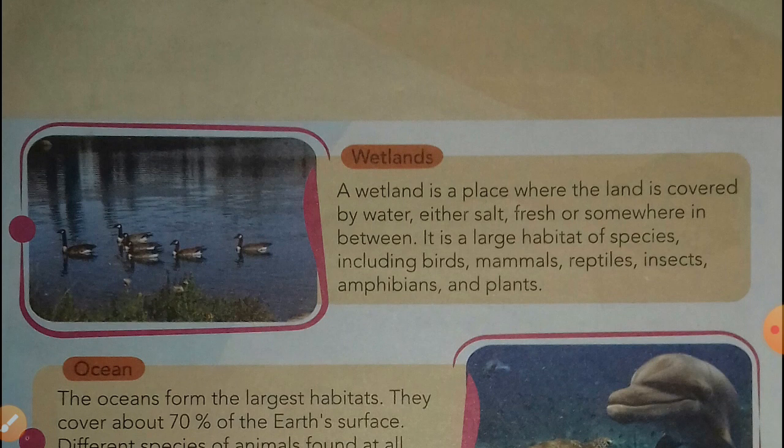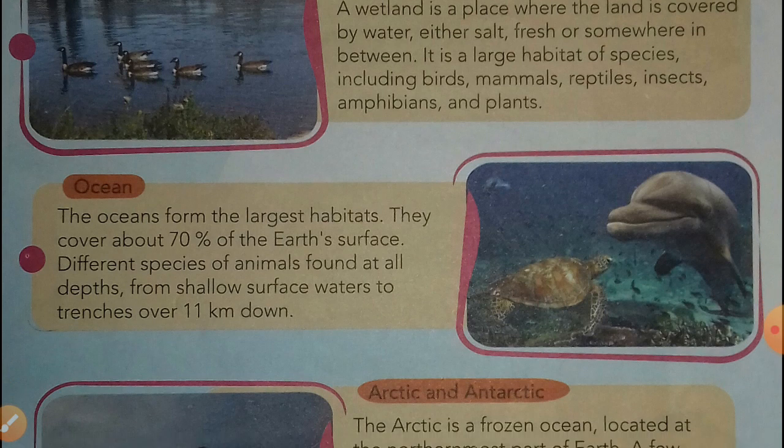The next habitat is the ocean. Ocean covers about 70 percent of the Earth's surface. There are different types of animals found at all depths in the ocean, like dolphins and other aquatic animals.